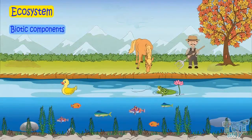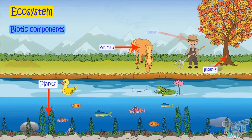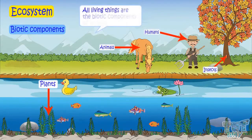Biotic components: All the living things — plants, insects, small animals, as well as big humans — are biotic components of an ecosystem.